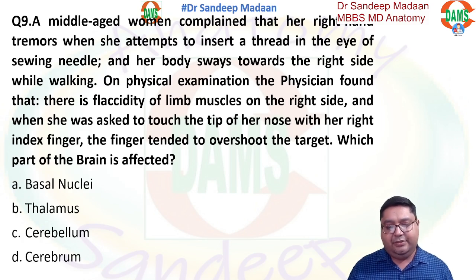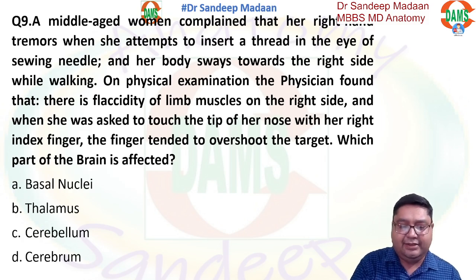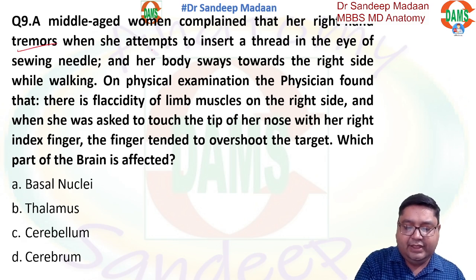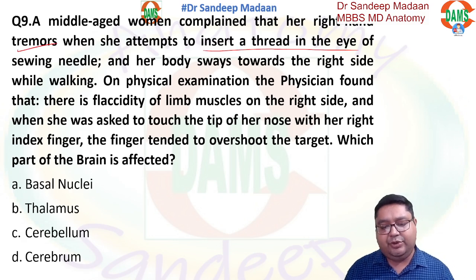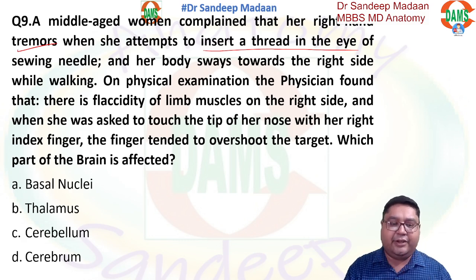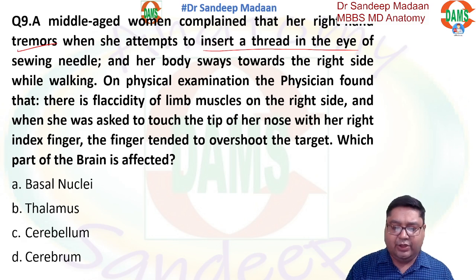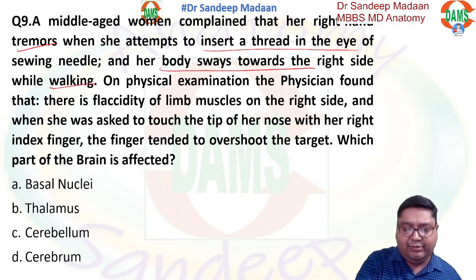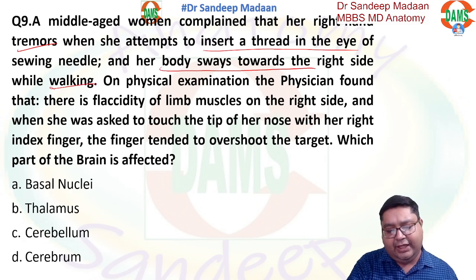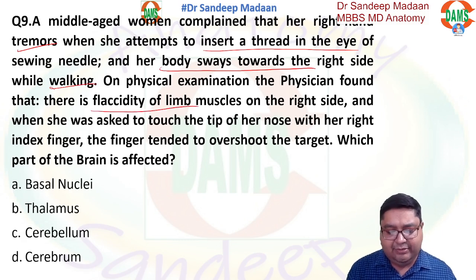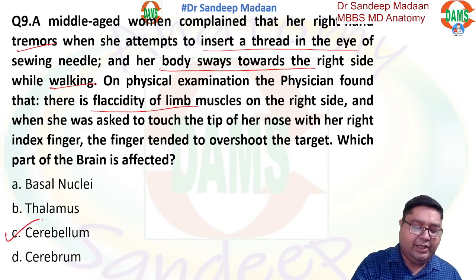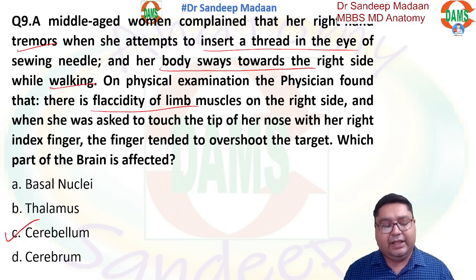This question describes a patient with hand tremors that occur when she has the intention to do something — for example, when she tries to put a thread through the eye of a needle. When she attempts a motor activity there is a tremor — intention tremor. Along with that, the body is swaying even while walking, there is hypotonia, and flaccidity of the limb muscles. All these features are characteristic of cerebellar syndrome, so the answer is C — cerebellum.